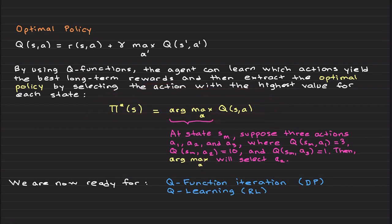So argmax_a Q(s,a), this is the optimal policy. So what this argument max does, I will explain. In case you don't know, at let's say at state sm.